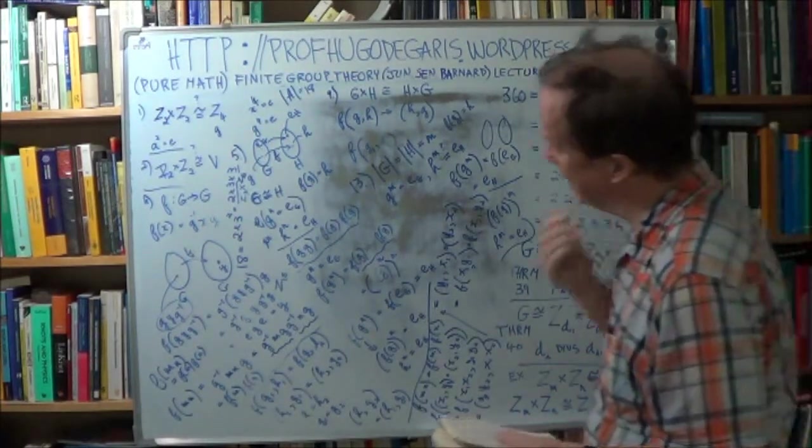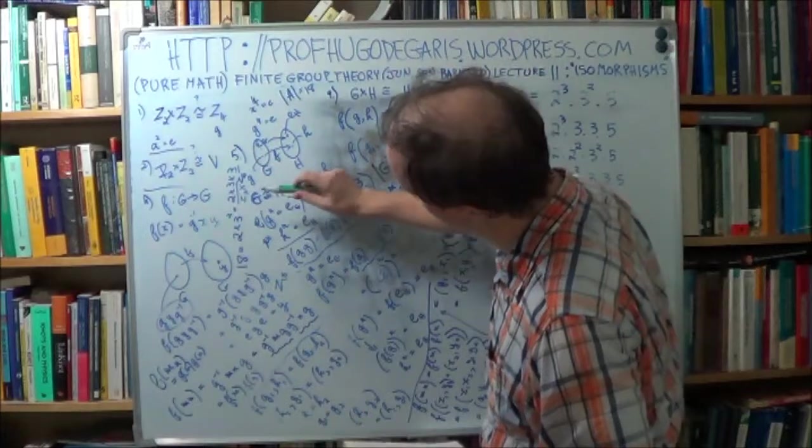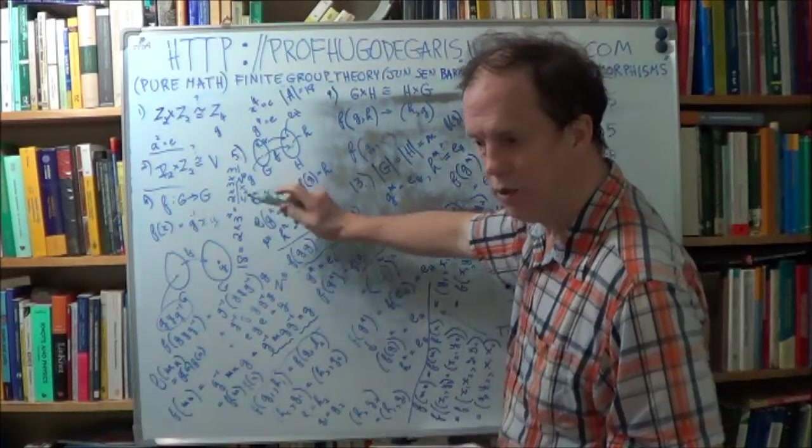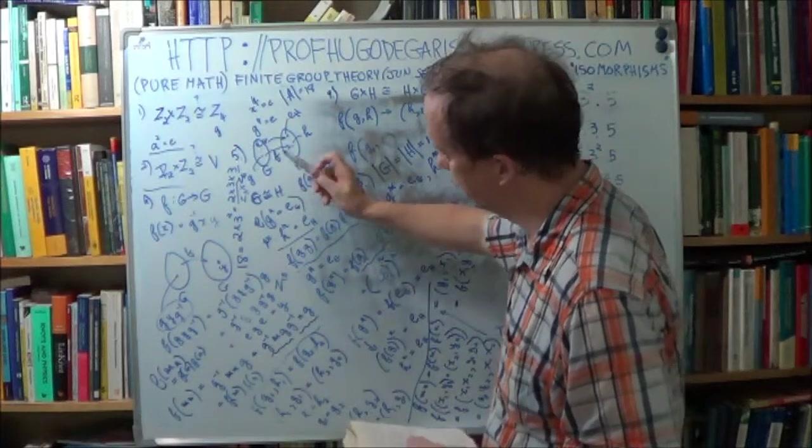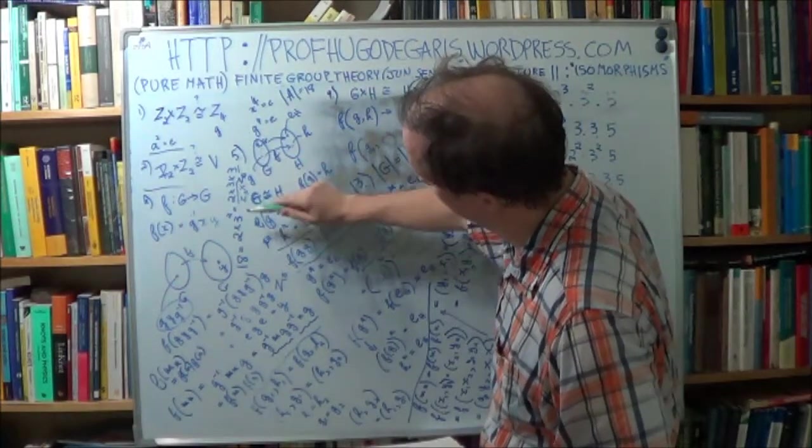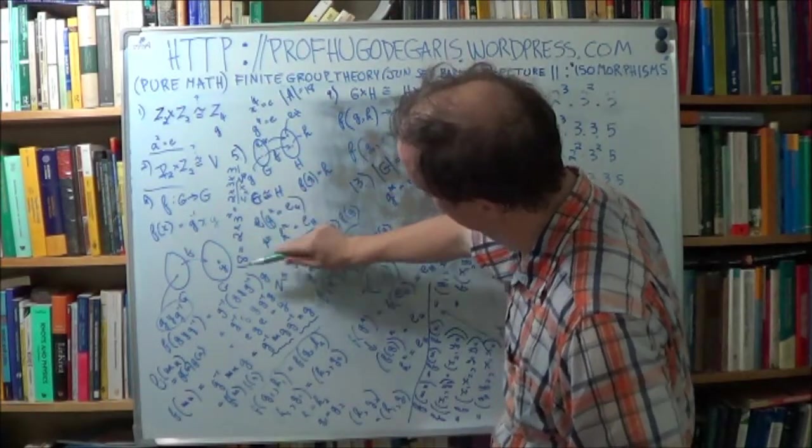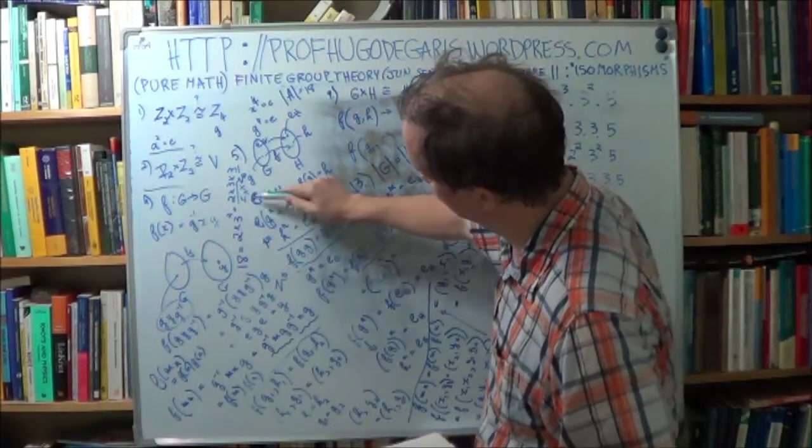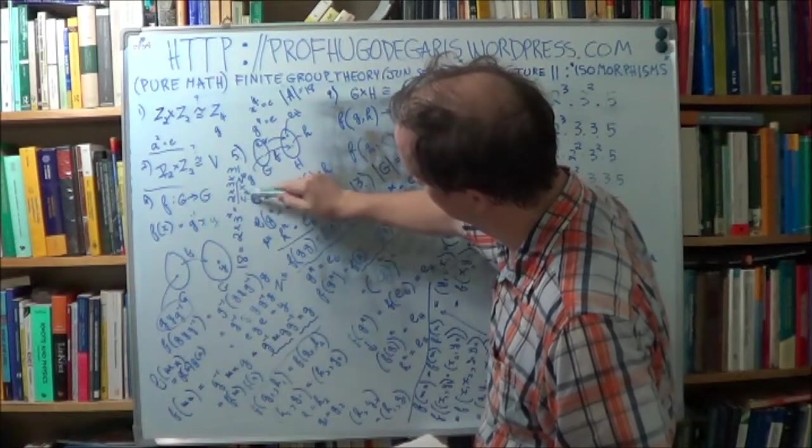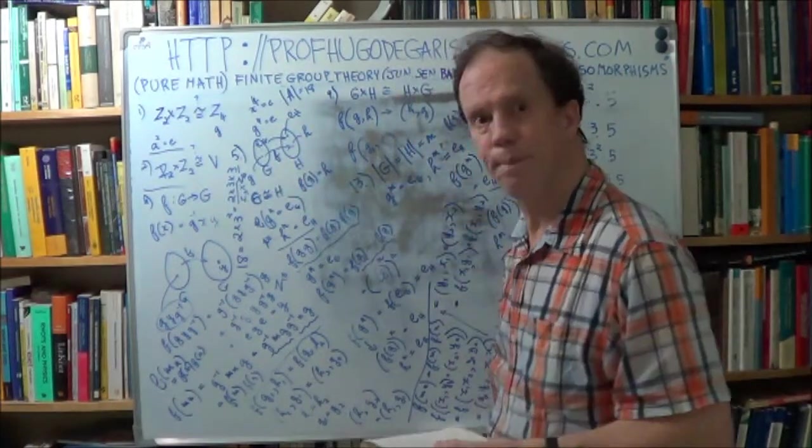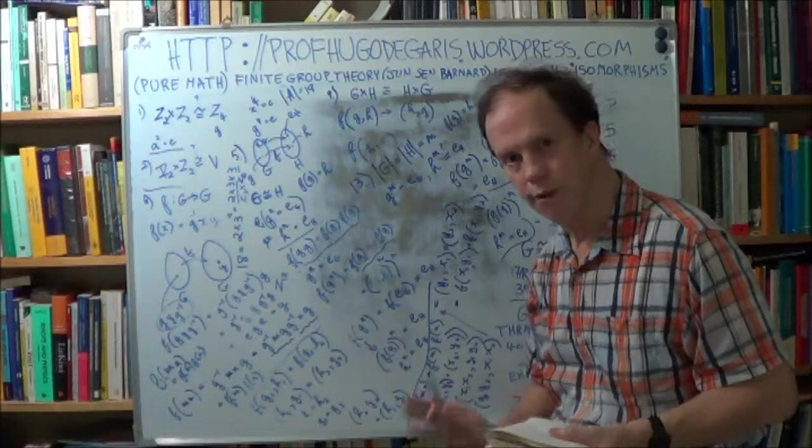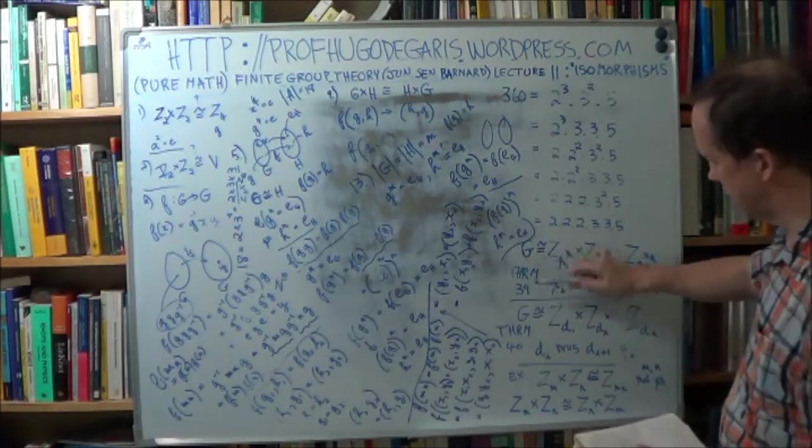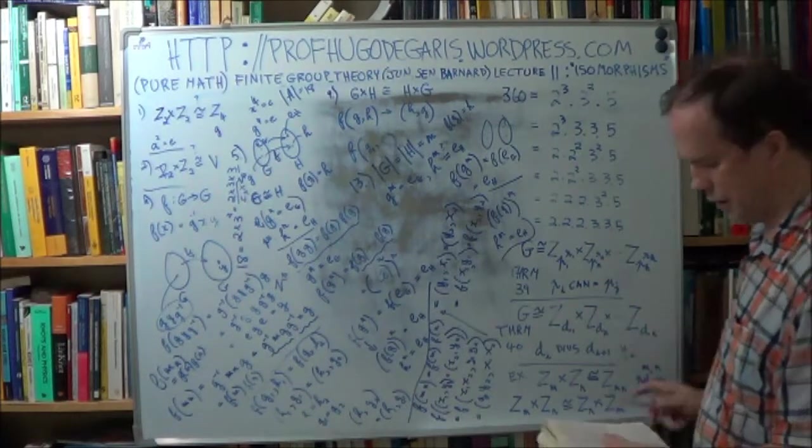So you've got two categories of groups, non-isomorphic groups. One of them, they will be isomorphic to z of 18, and the other category, they will be isomorphic to z3 times z6. Hope you followed that. I've used this, and I've used theorem 39 and 40 together.